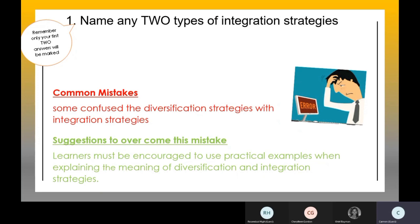Integration is where one company buys over another company — it can be in the same distribution channel or one competitor buying out another competitor. Integration focuses on companies coming together, while diversification focuses on different products that the business intends to sell to customers to attract more customers. Diversification: adding new products or services. Integration: buying out or taking over companies.